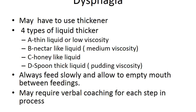Patients with dysphagia may also need to use a liquid thickener. There are four types: (a) thin liquid — low viscosity; (b) nectar-like liquid — medium viscosity; (c) honey-like liquid; and (d) spoon-thick liquid such as pudding viscosity. Always feed slowly, allow the client to empty their mouth completely between feedings, and keep in mind they may require verbal coaching for each step.